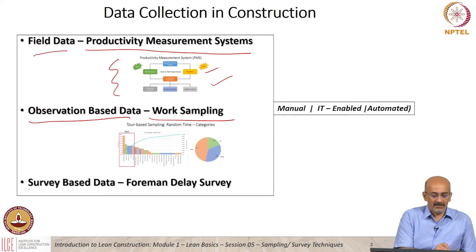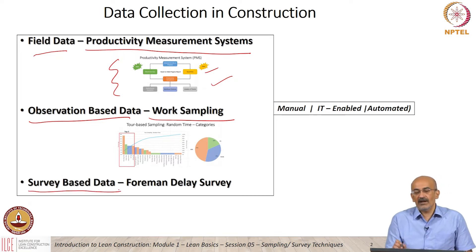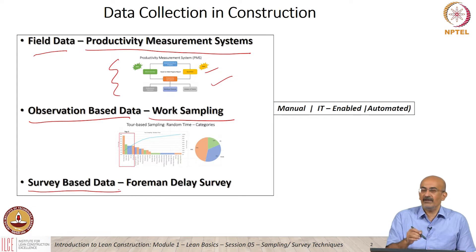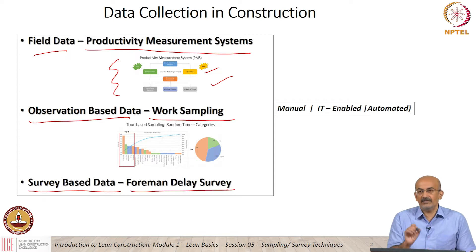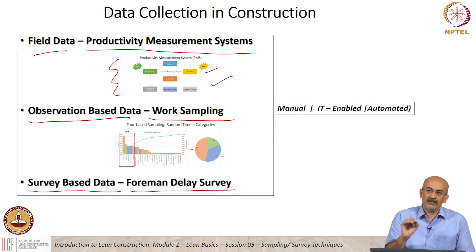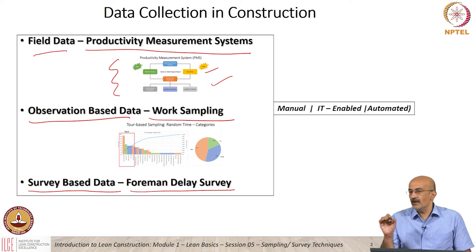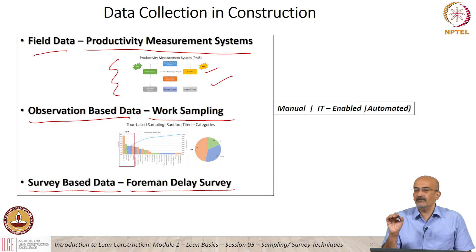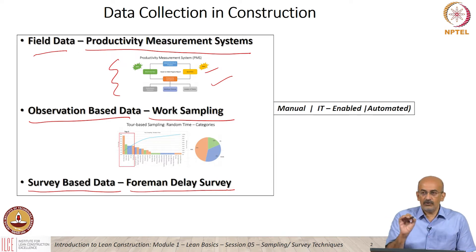The third way in which we can get data is survey-based, where I am not actually getting field data or going to site and doing an observation, but I am asking the people on site to fill in a form or a survey to assess what is happening on the site. In this session, we are going to cover form and delay survey, which is a survey technique that is very simple. The form and delay survey and its equivalents have been found to give quick and reasonably accurate results, and it is fairly simple to implement given some conditions are right on site.